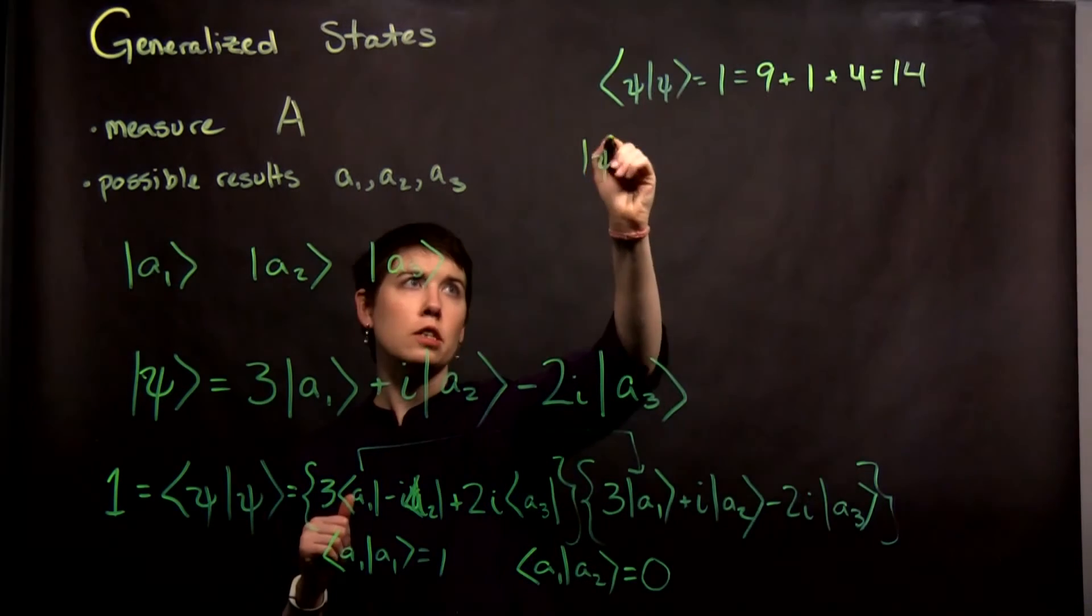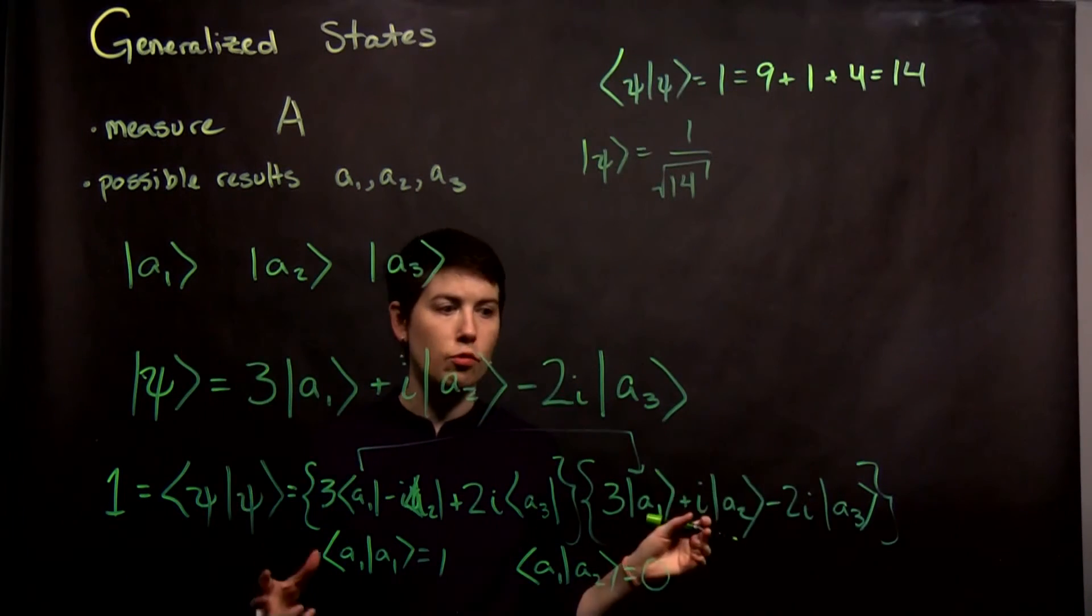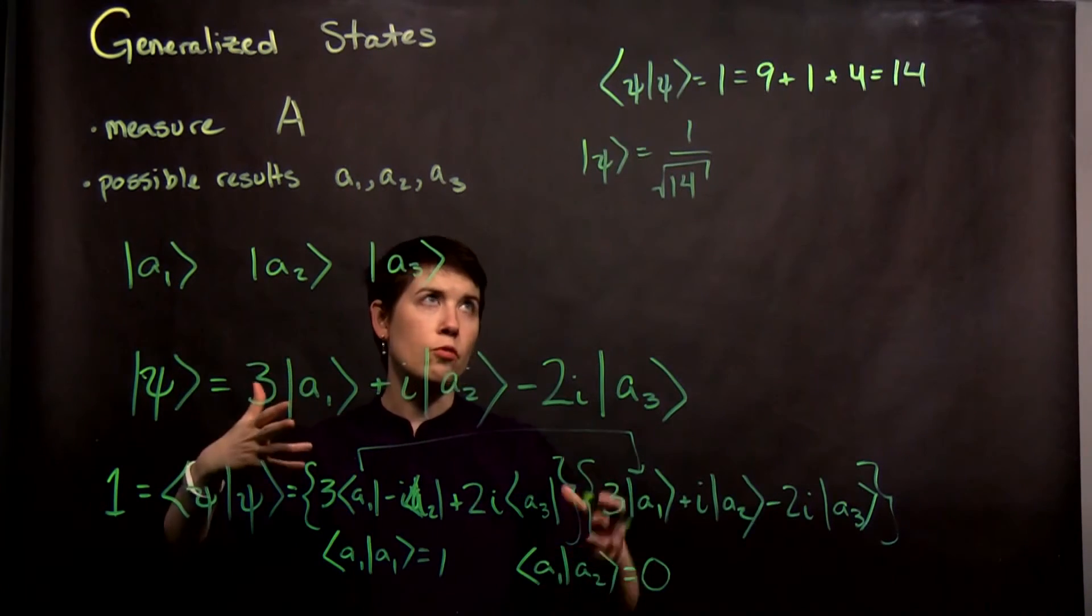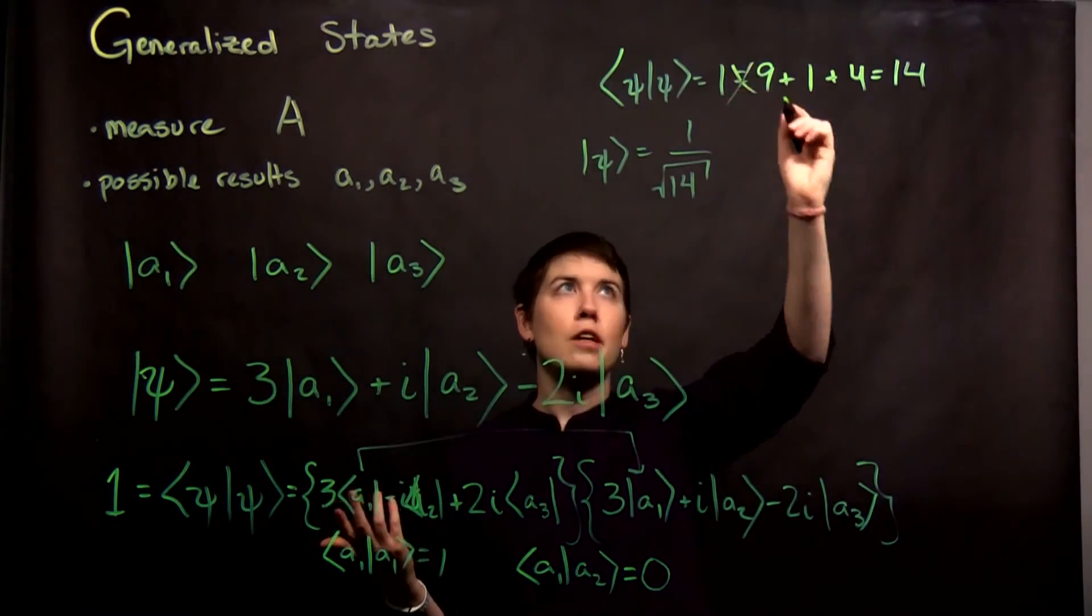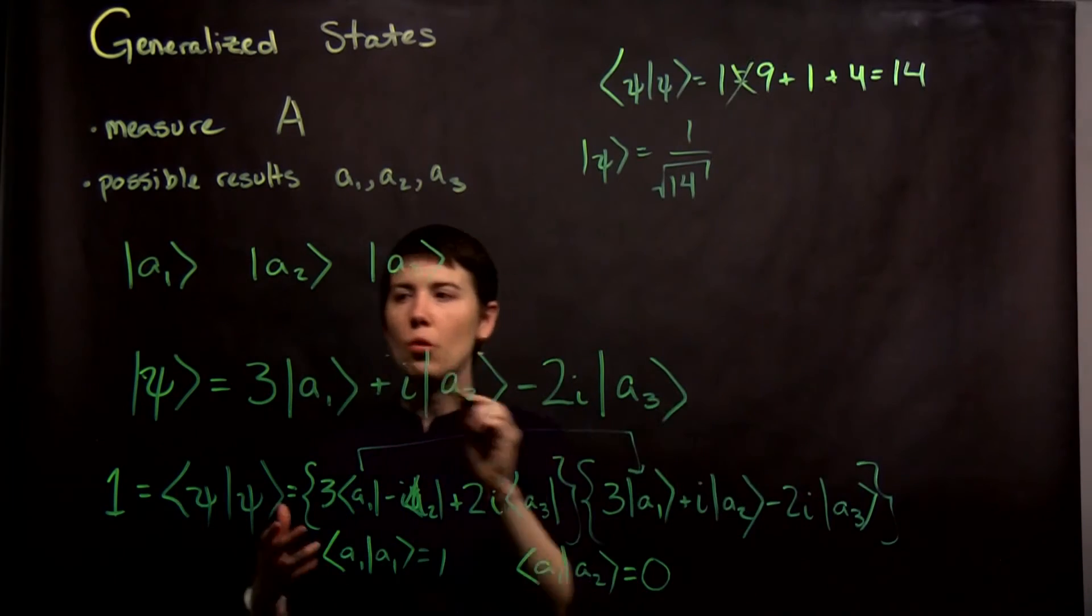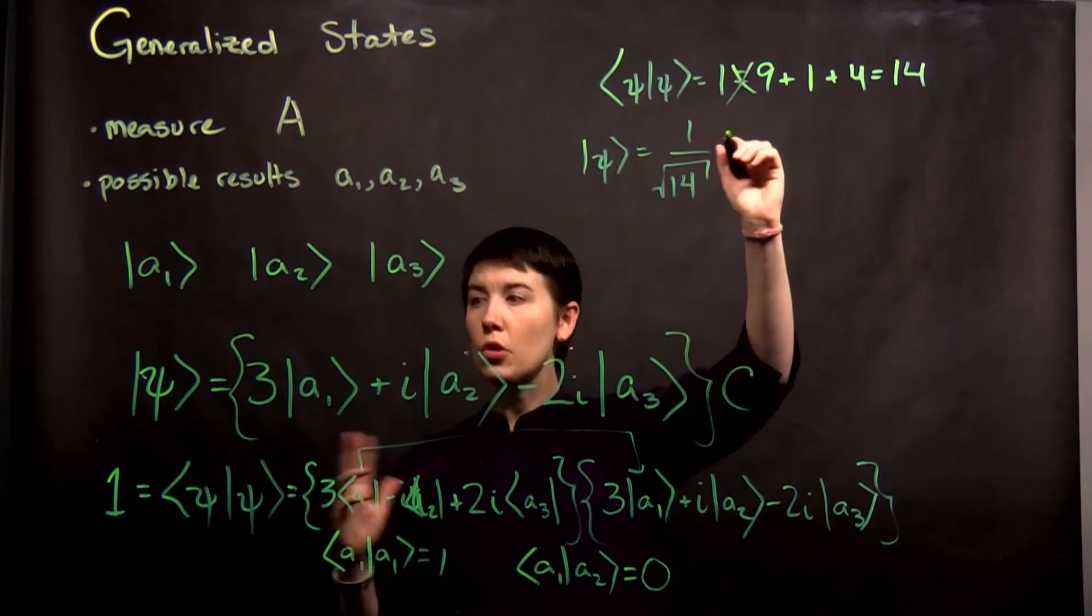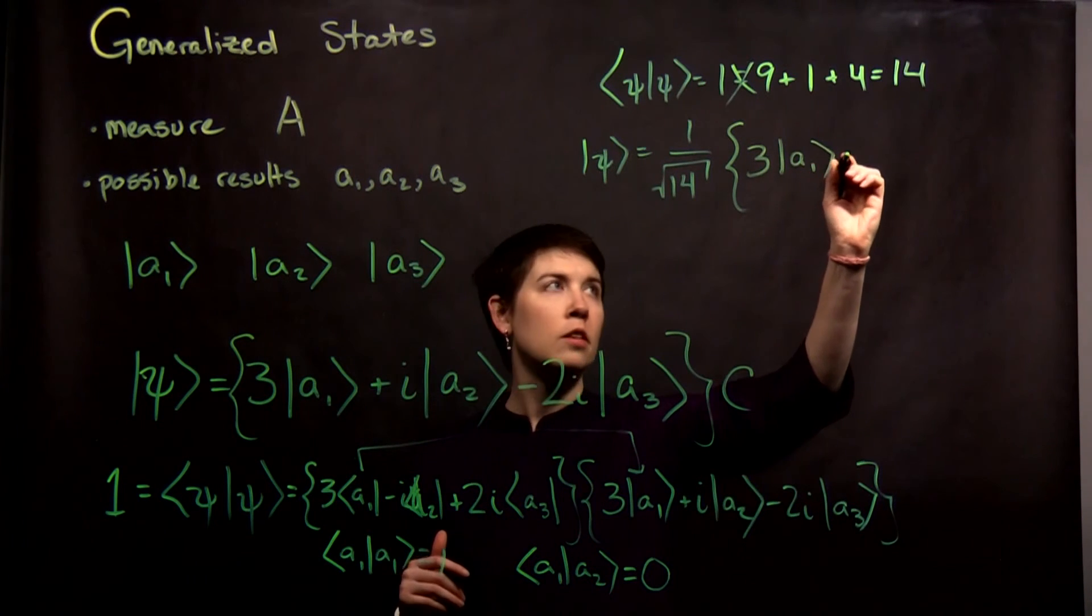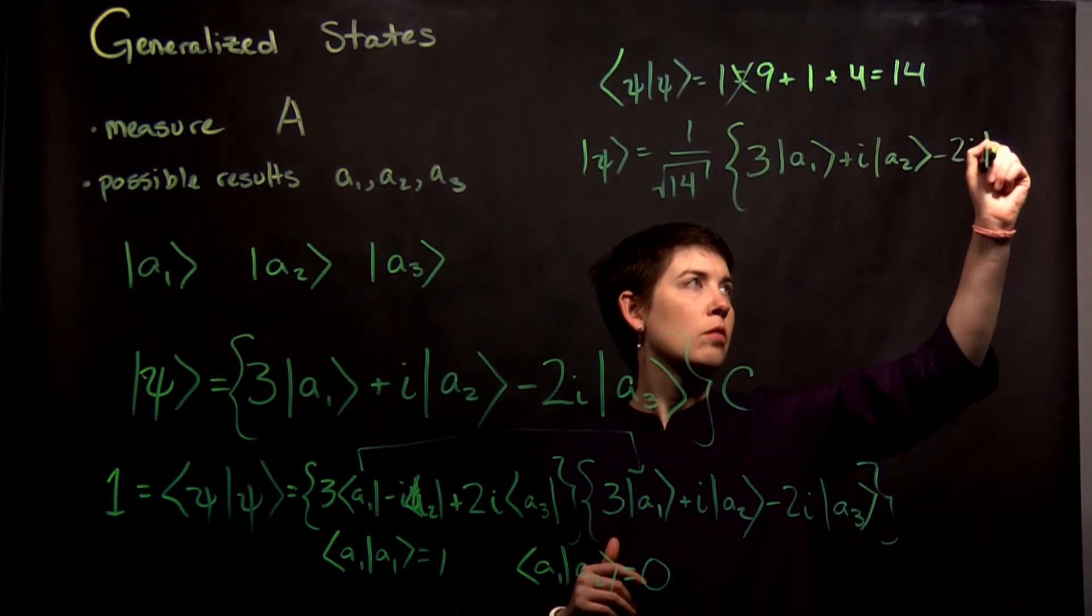So our normalized state here is going to be 1 over the square root of 14, right? Because we have to have some coefficient out front. In this case, I didn't explicitly set up the coefficient out front and solve for it. I just said, what is my inner product right now and it actually needs to be 1, right? So that's not true. Since it needs to actually be 14, this would be the case. So this is what that coefficient is, and then 3|A1> + i|A2> - 2i|A3>.